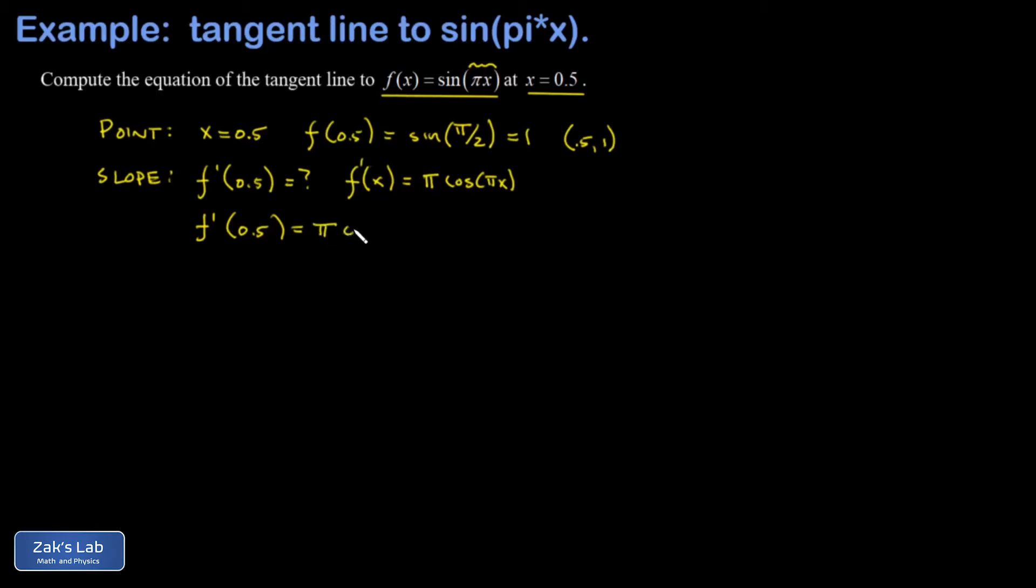And when I evaluate that at x equals 0.5, I get pi cosine of 0.5 pi, or pi over 2. But the cosine of pi over 2 vanishes. So the slope of our tangent line is actually 0 here.